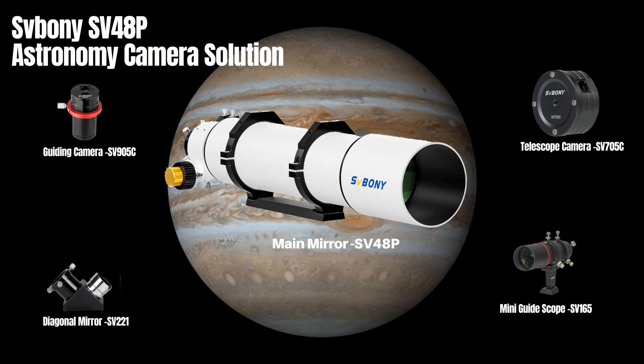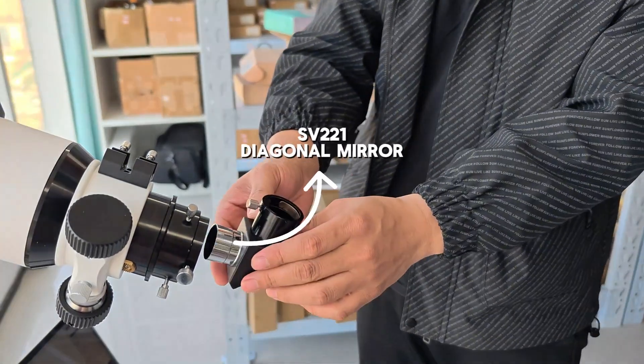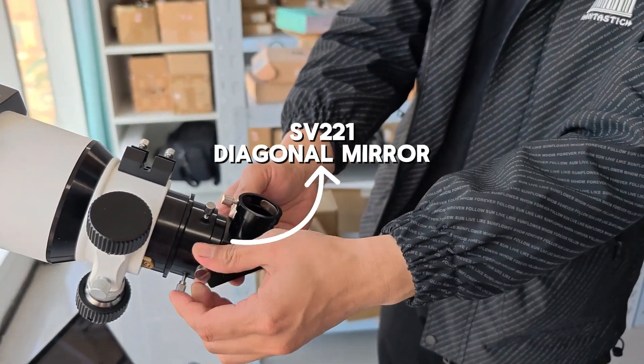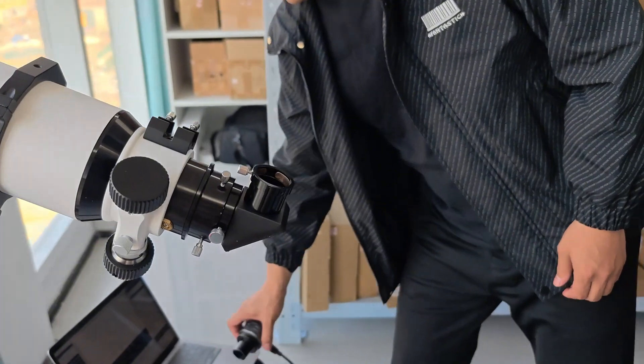We will show you how to set up the astronomical camera to capture clear images of the celestial objects. At the first step, we will install the Iceway 221 Zenith mirror to get a better viewing angle.